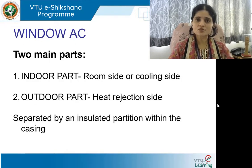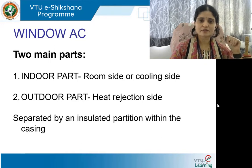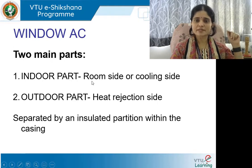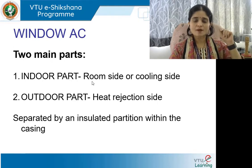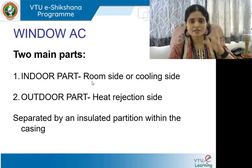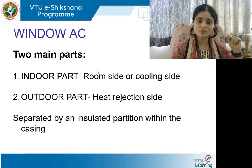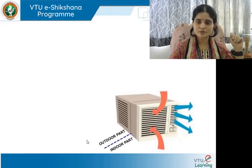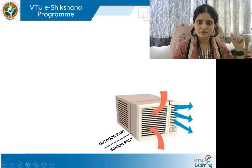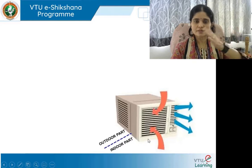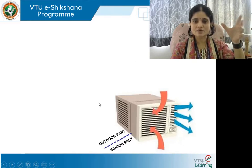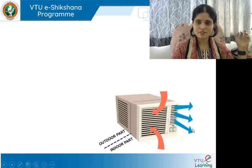There are two main parts to a window AC. The box has an indoor part and an outdoor part. The indoor part is also called the room side or the cooling side, while the outdoor part is the heat rejection side — the heat from inside is taken and thrown to the outside. Both are separated by an insulated partition within the casing. The smaller part is for the indoors inside the room; the back side, the larger part, is the outside.